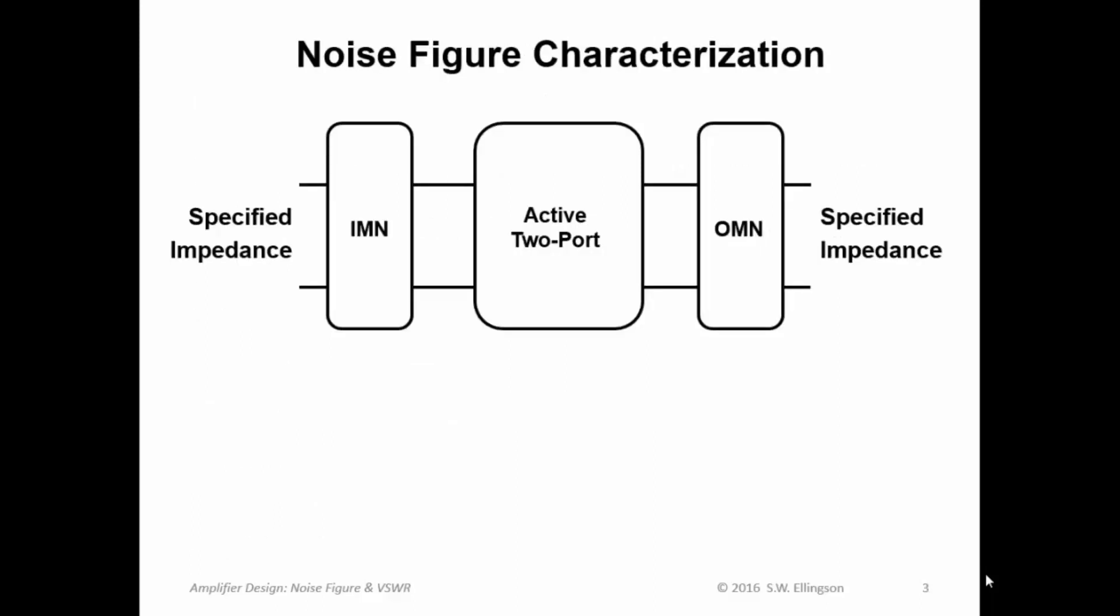Okay, noise figure characterization. So let's go back to our basic top-level picture of how amplifiers work. We have an input with a specified impedance, often but not always 50 ohms. We have an output with a specified impedance, often but not always 50 ohms. An input matching network, an output matching network, and then an active two-port, which is typically characterized in terms of its S parameters.